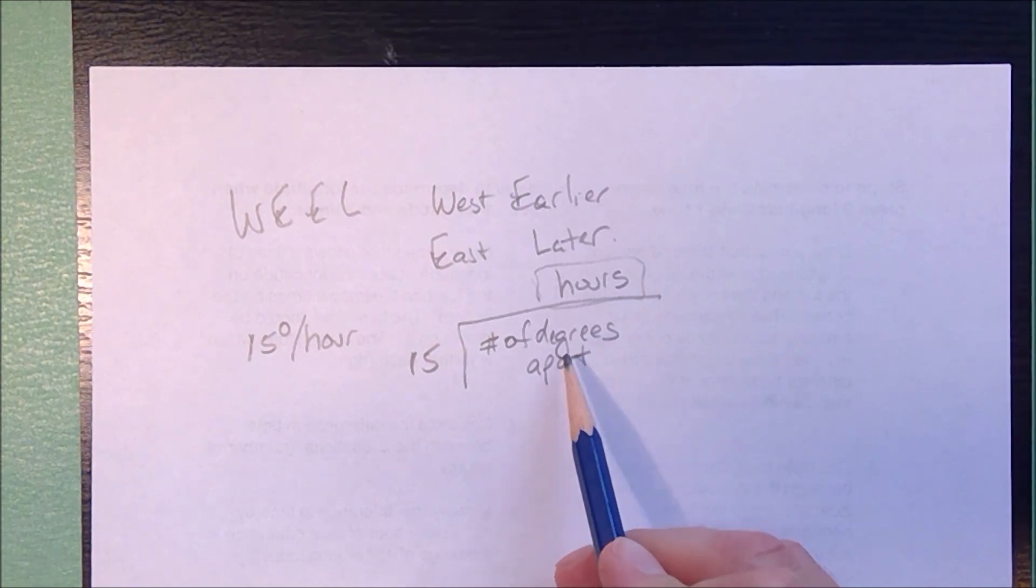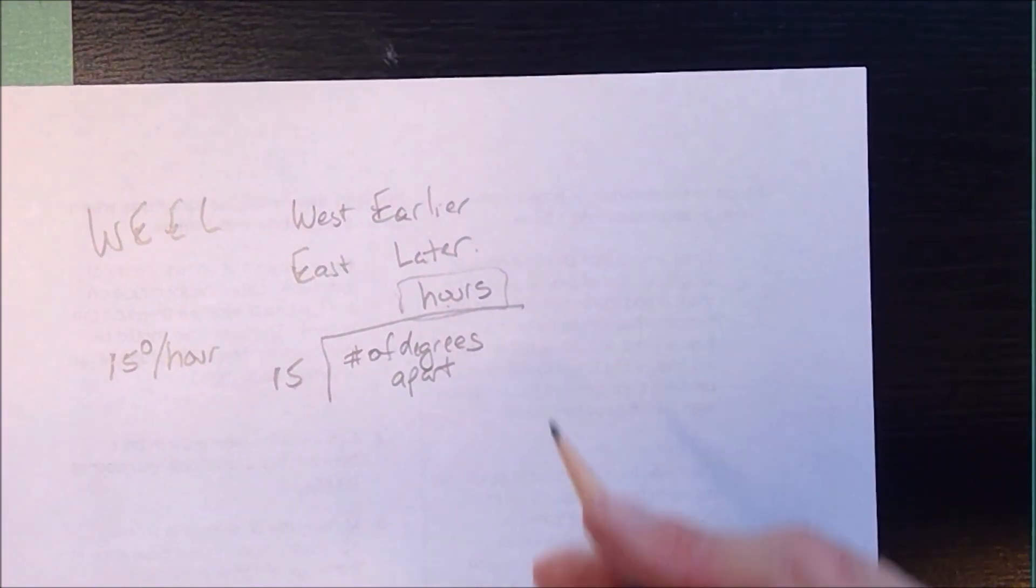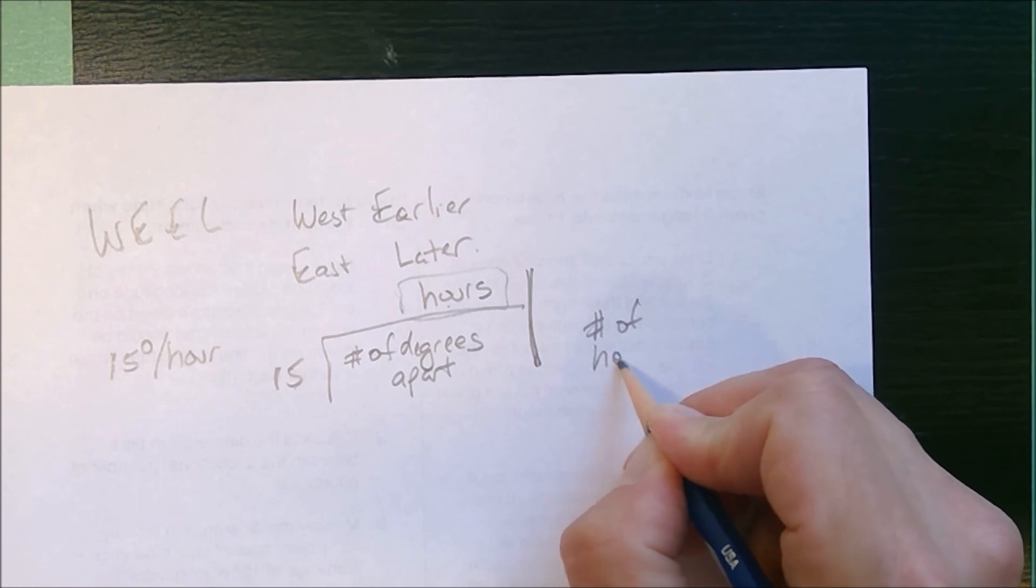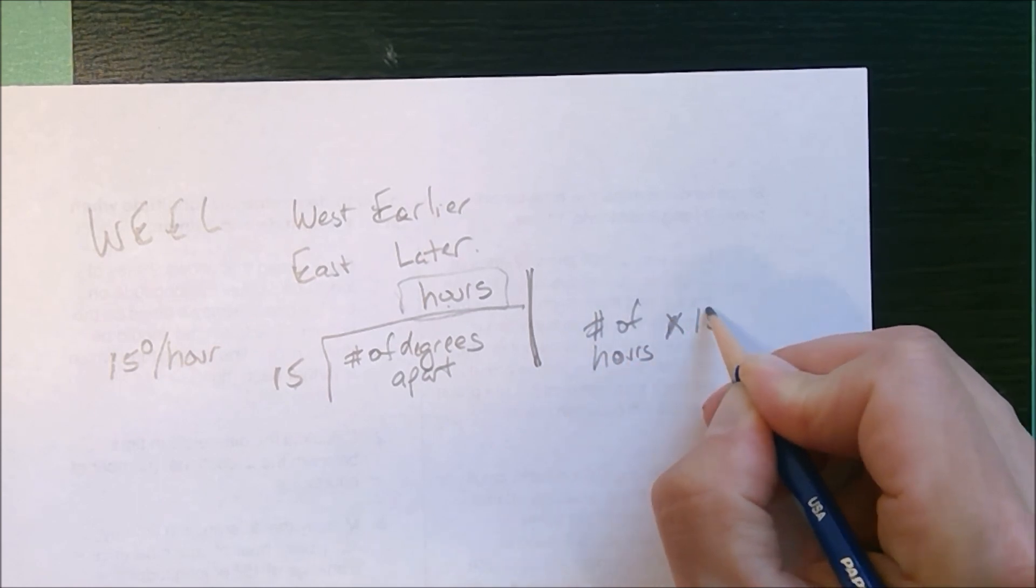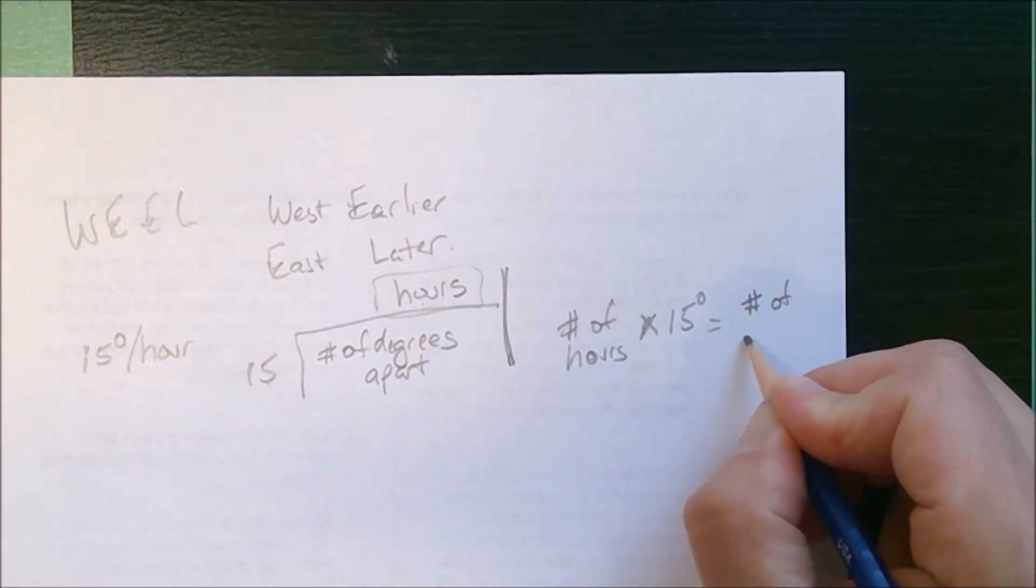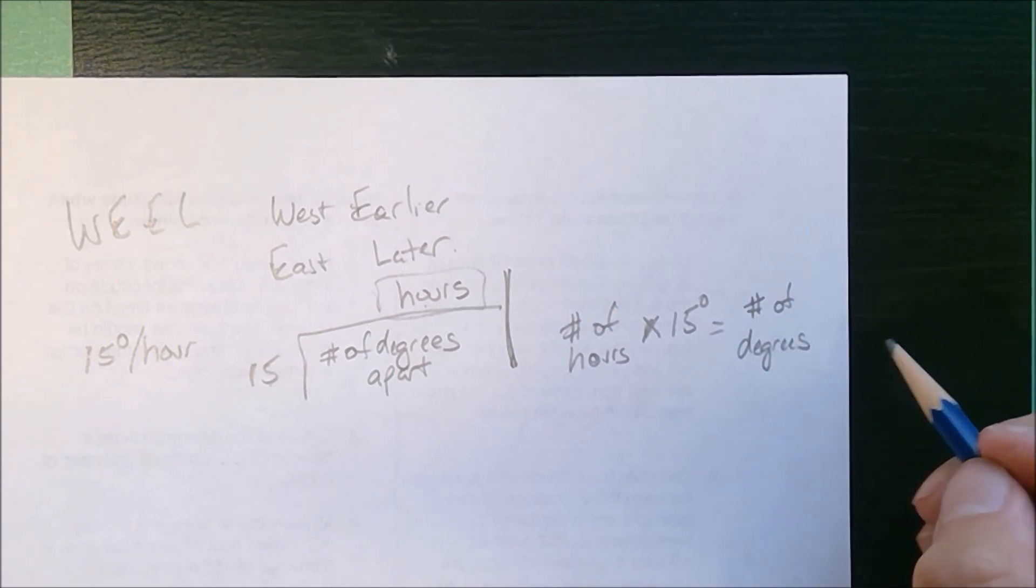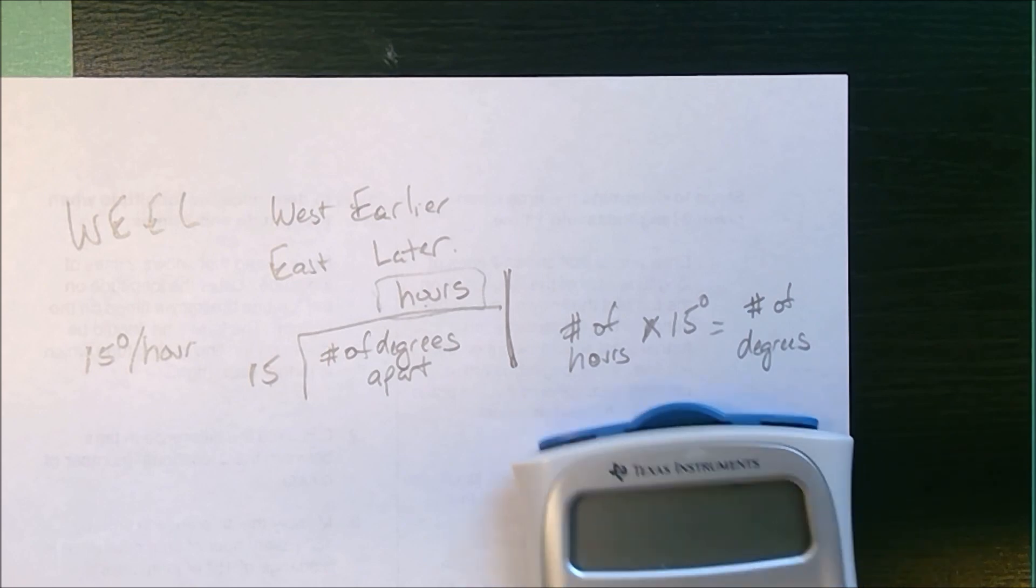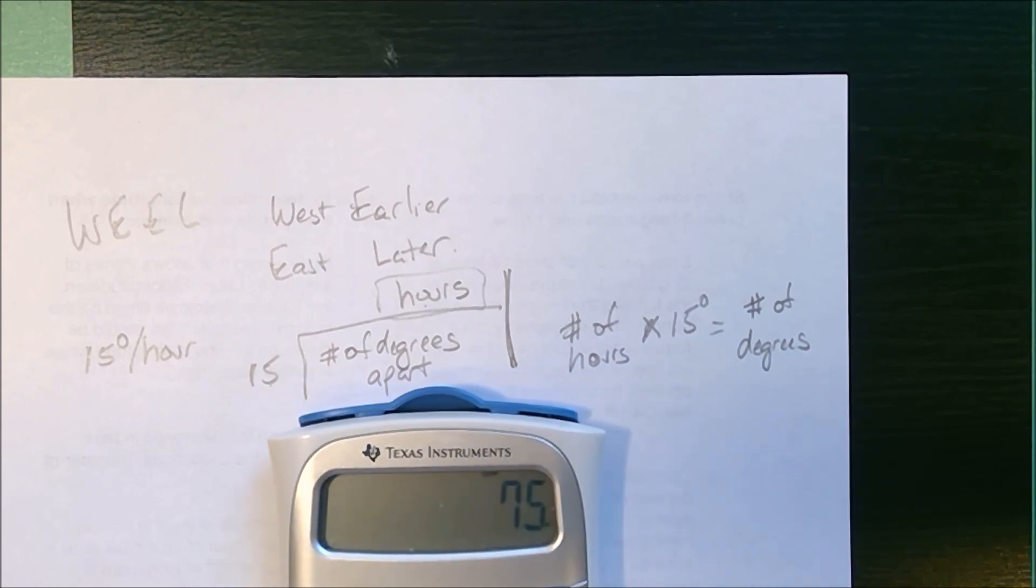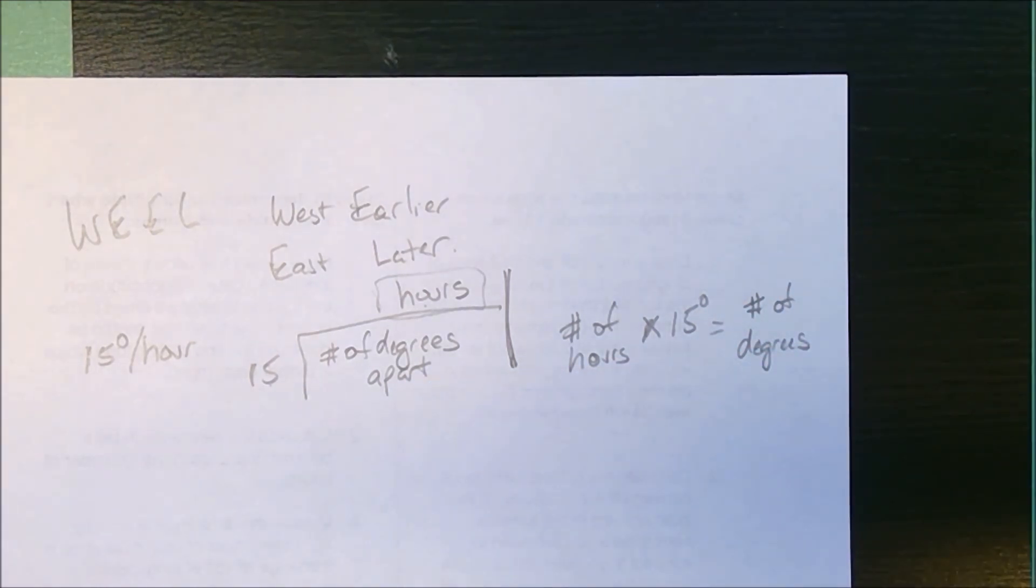If I was 45 degrees apart, 45 divided by 15 would give me a three hour time frame. Now if I know the number of hours, I'd multiply by 15 degrees and that gives you the number of degrees. If you had a five hour difference, I would do five times 15 and get 75 degrees between the two locations. That's how many degrees of longitude they are separated. Remember: west is earlier, east is later.